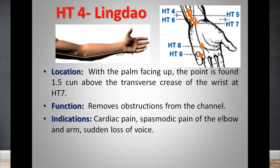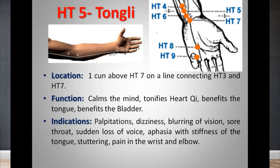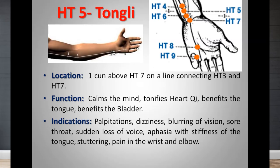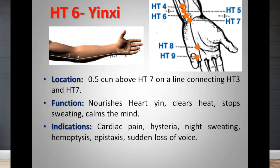One important point is Heart 5, Tongli, used specifically for speech disorders — loss of voice, irritation in the voice, or any inconvenience in the vocal cord. Location: 1 cun proximal to the medial end of the transverse wrist crease. Apart from speech, it can also be used for palpitations, dizziness, blurring of vision, sudden loss of voice, aphasia with stiffness of the tongue, and pain in the wrist and elbow. Heart 5 is also the luo-connecting point of the meridian.